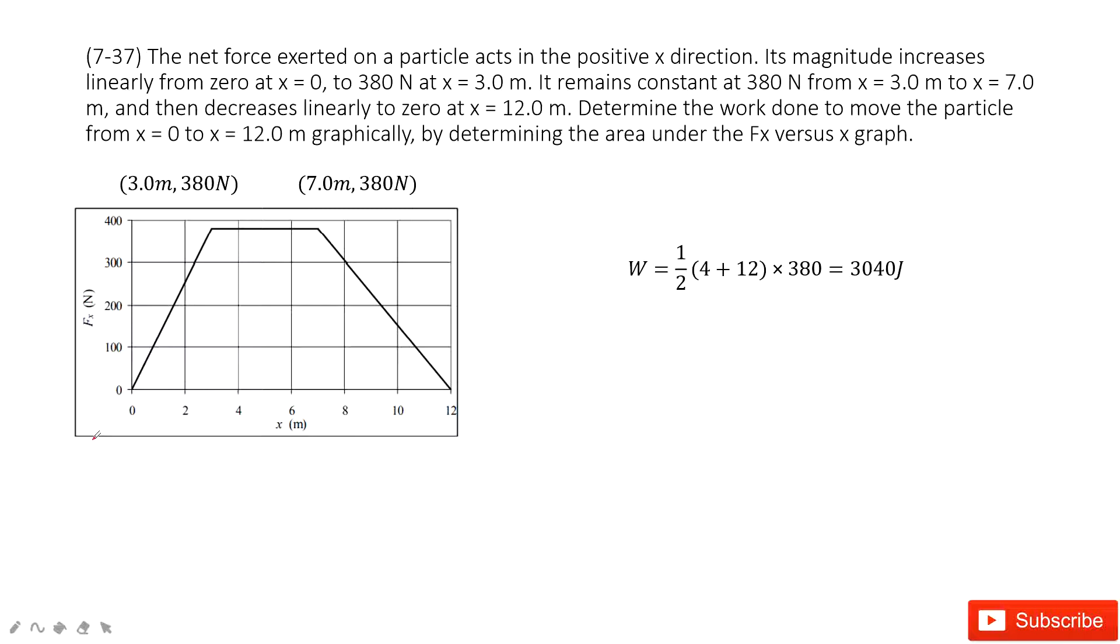As you can see, in this problem, we get the F_X versus X picture. That is the net force. This is the force on the X component, this is the position at the X component. We can see at first, this force has a linear relationship with X, it changes to zero, then the force becomes constant, and then the force decreases to zero in this position.